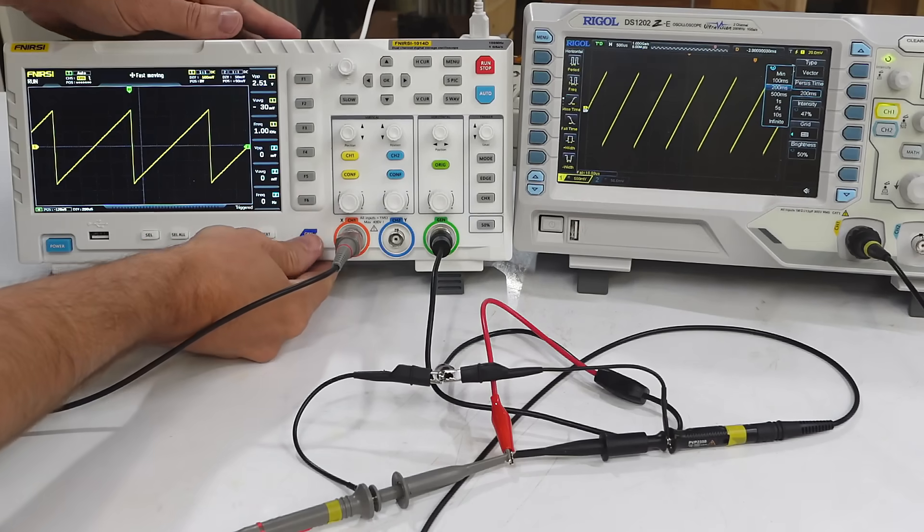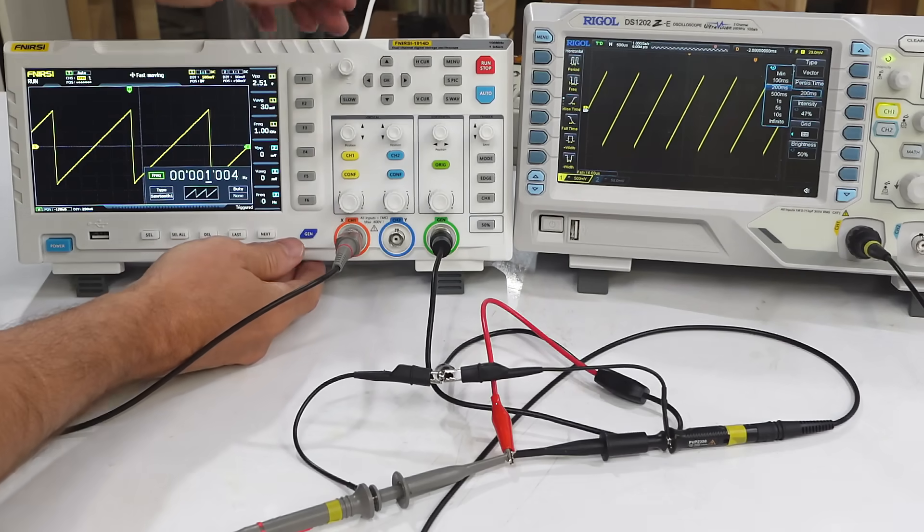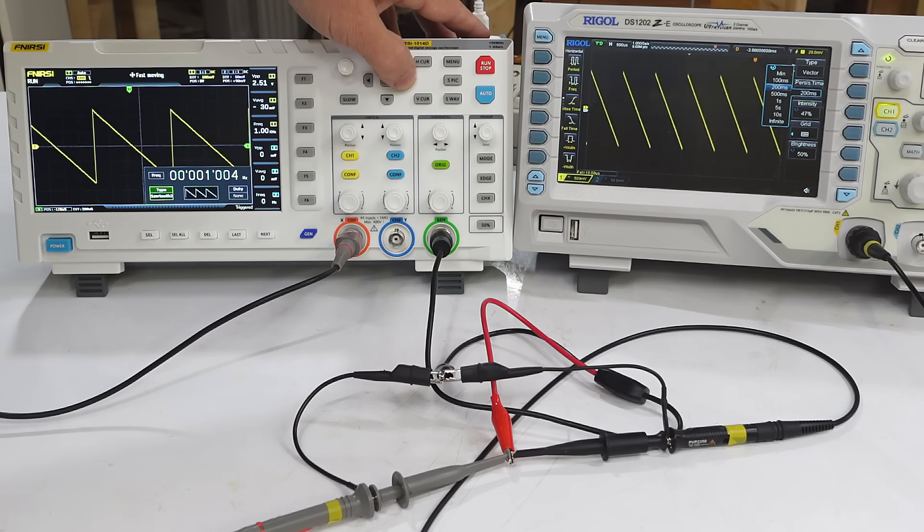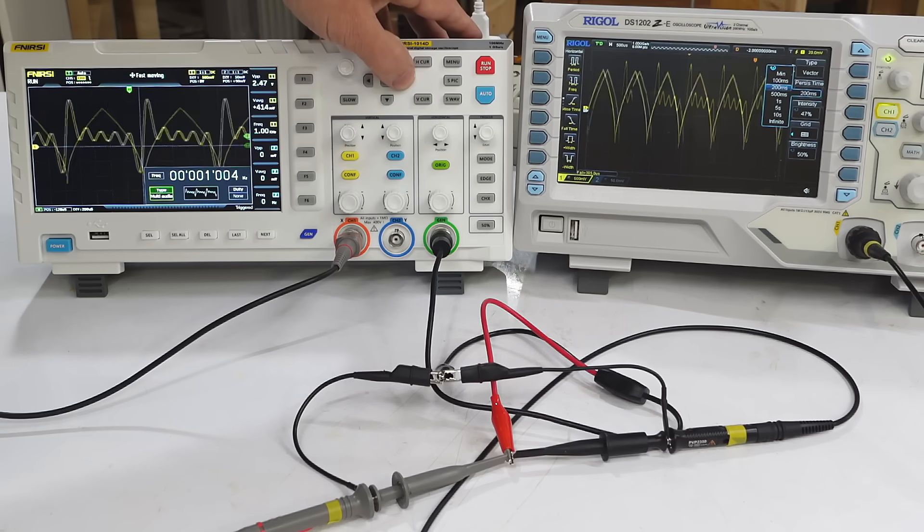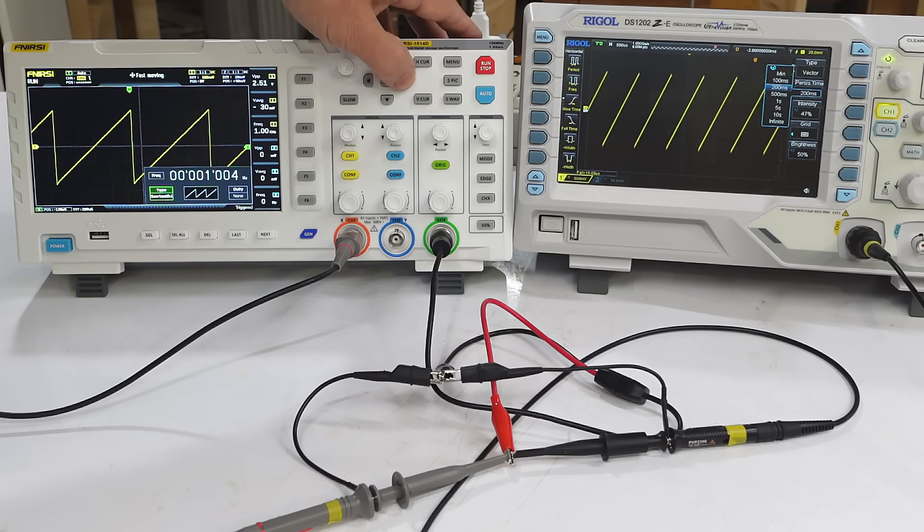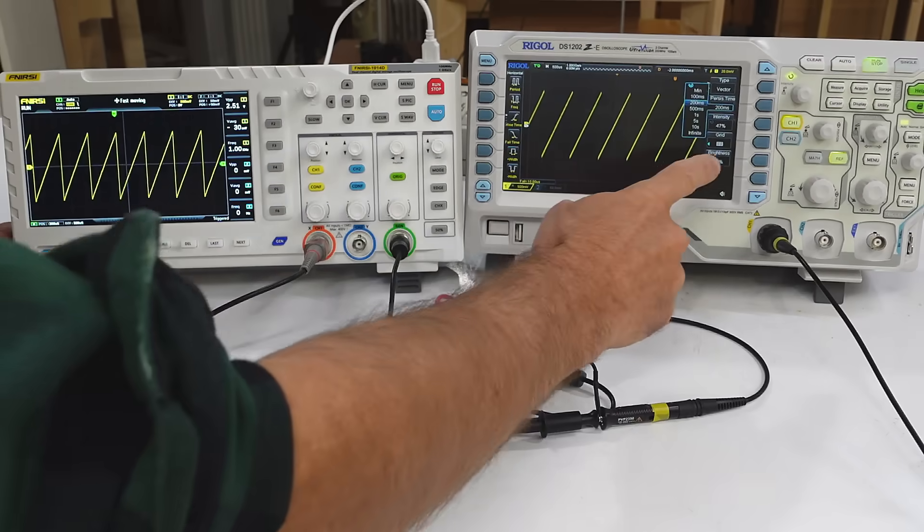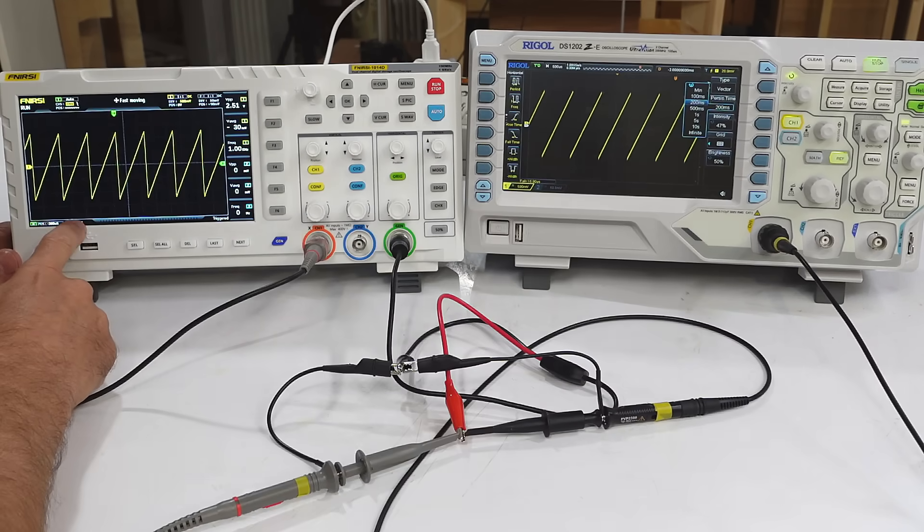And this one also has a built-in signal generator, which the Rigol doesn't have. And I can change various parameters here, like the frequency. Or the type of waveform. So right now I've got a 1004 hertz sawtooth waveform, which I'm displaying on both of these at 50 microseconds per division.